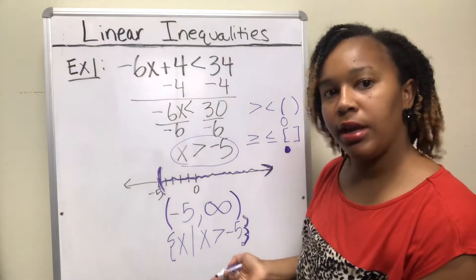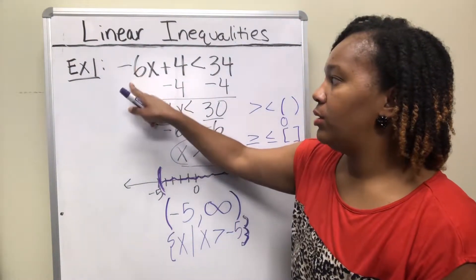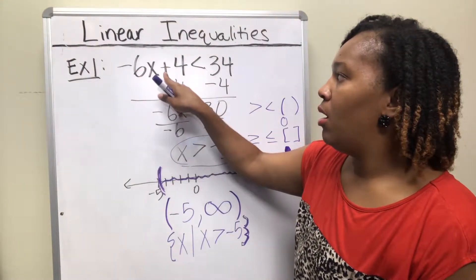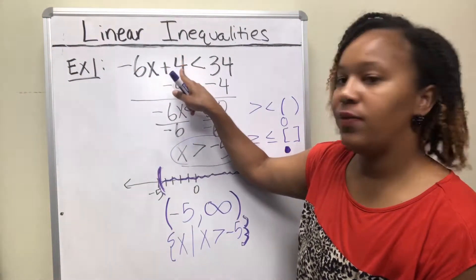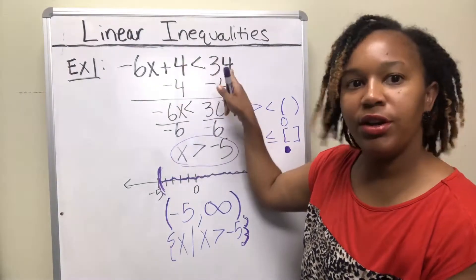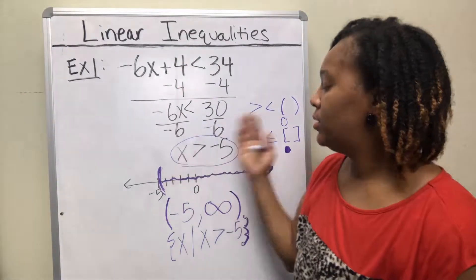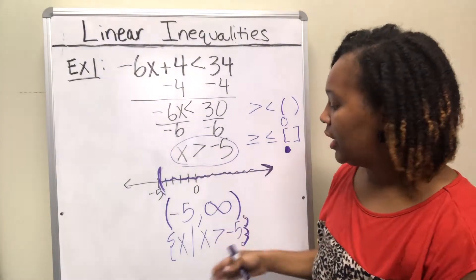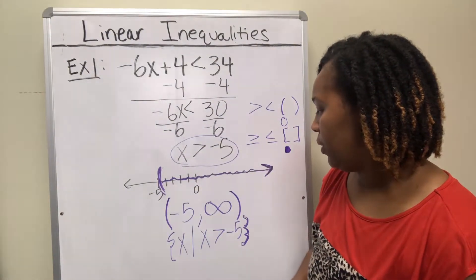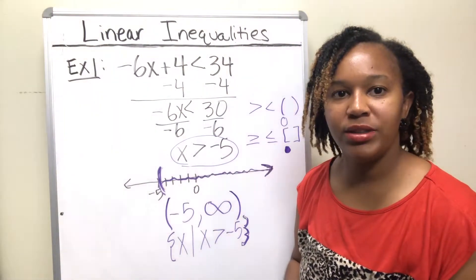This solution says you can plug in anything bigger than negative 5 and get a true statement. For example, 0 is bigger than negative 5. Negative 6 times 0 is 0, plus 4 is 4. Is 4 less than 34? Yes, 4 is less than 34. So you can take any number greater than negative 5, plug it in, and get a true statement.